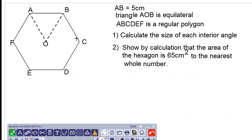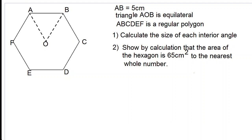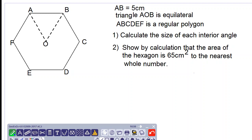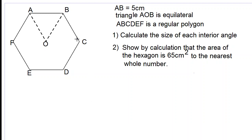So finding the size of each interior angle, let's identify where are the interior angles. These angles in blue are interior angles, and we know that each angle has the same size because it's a regular polygon. So let us use the formula for sum of interior angles: 180(n-2).